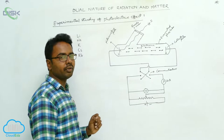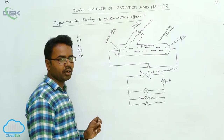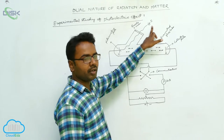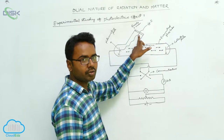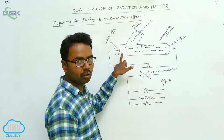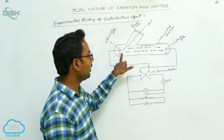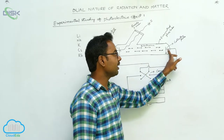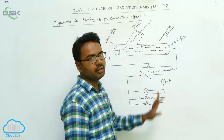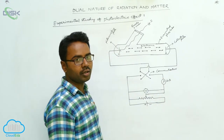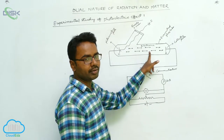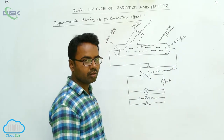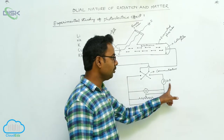This is the experimental arrangement to study the photoelectric effect. The monochromatic source S emits monochromatic light, which passes through the quartz window and falls on the photosensitive plate. The photosensitive plate emits electrons — called photoelectrons — which are collected by the collector plate. These photoelectrons flow in the external circuit, causing an electric current called the photocurrent, which is measured using the microammeter.